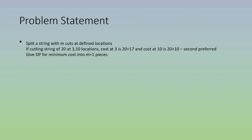If you cut at 3 first, the initial cost is 20, and the remaining string of length 17 gets cut next, so the total cost is 20 plus 17 equals 37. But if you cut at 10 first, the cost is 20 plus 10 equals 30, which is lower. The cost is always the length of the incoming string, so order of cuts matters.